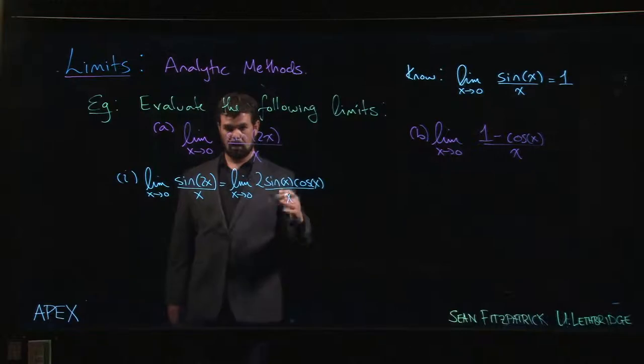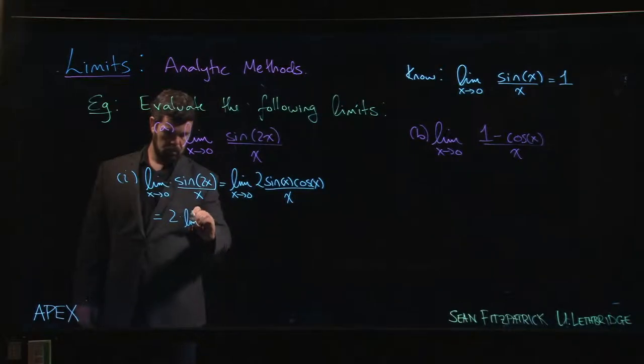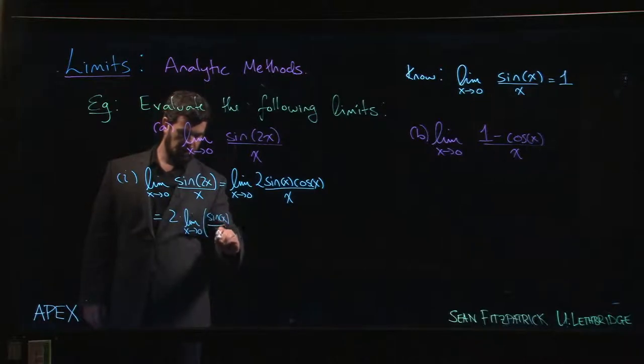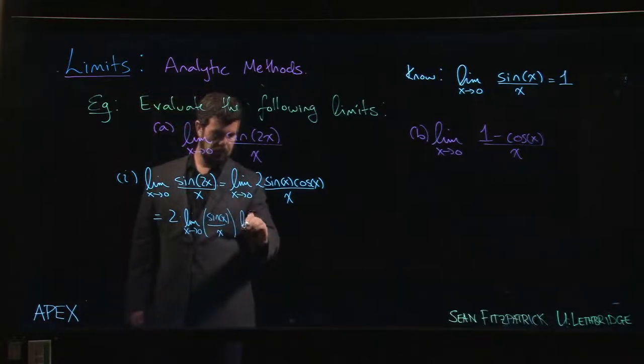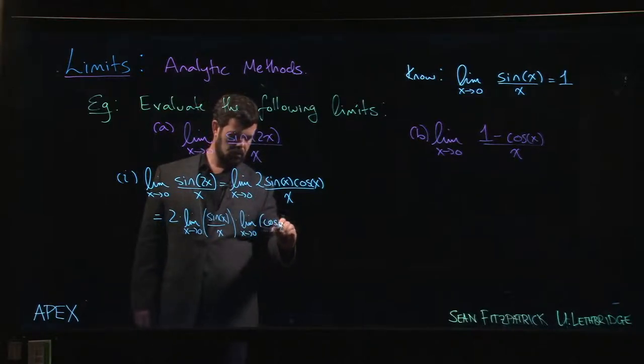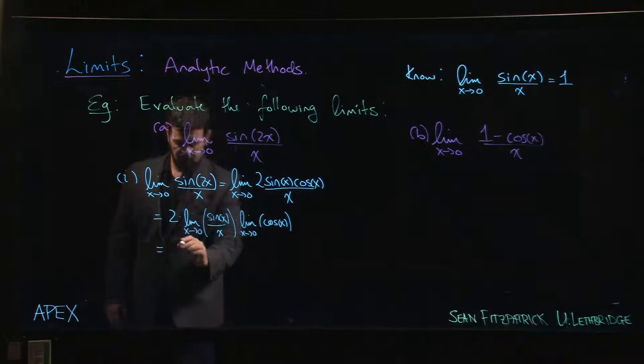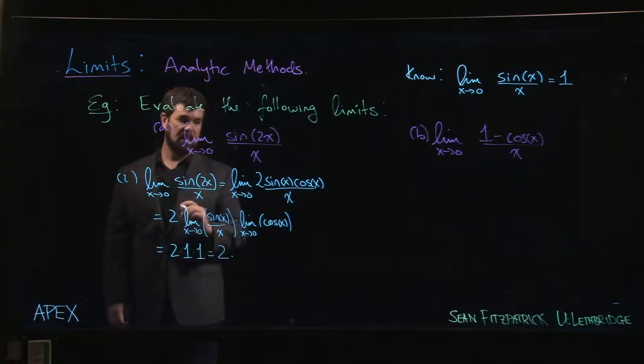And now you can use product and constant rules to rewrite this as 2 times the limit as x goes to 0, sine x over x times the limit as x goes to 0 of cos x. And we know that this limit is 1 from there, and we also establish that we can do trig functions by direct substitution. So this is just cos of 0, which is also 1. So it's 2 times 1 times 1. So we get that answer of 2.